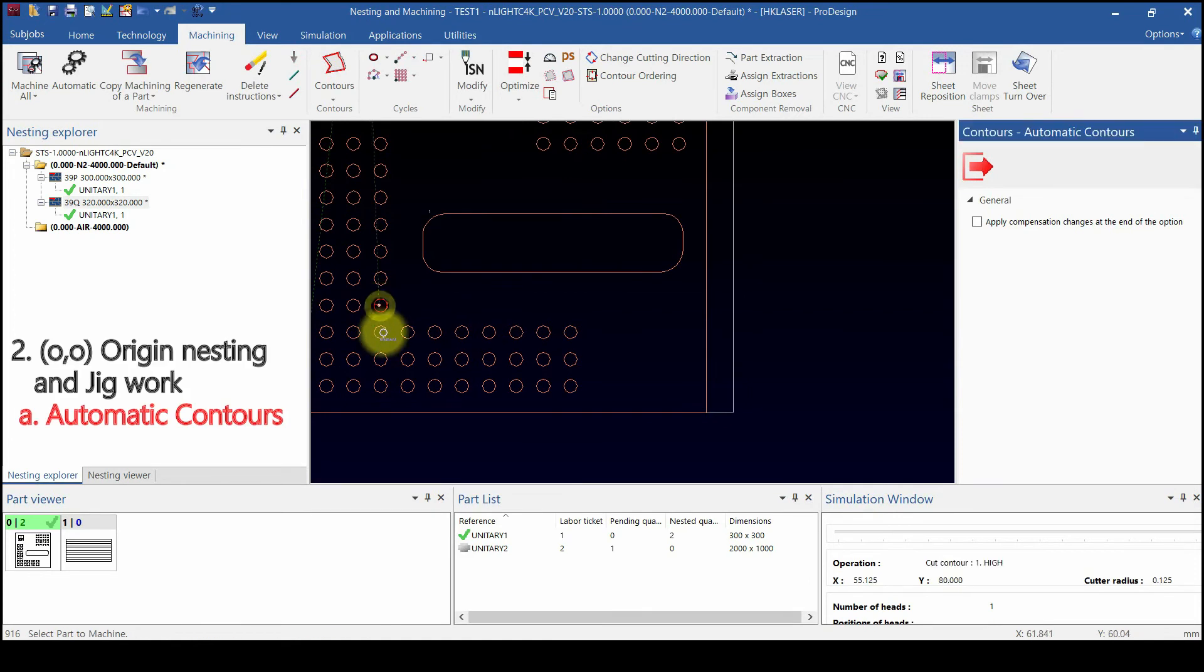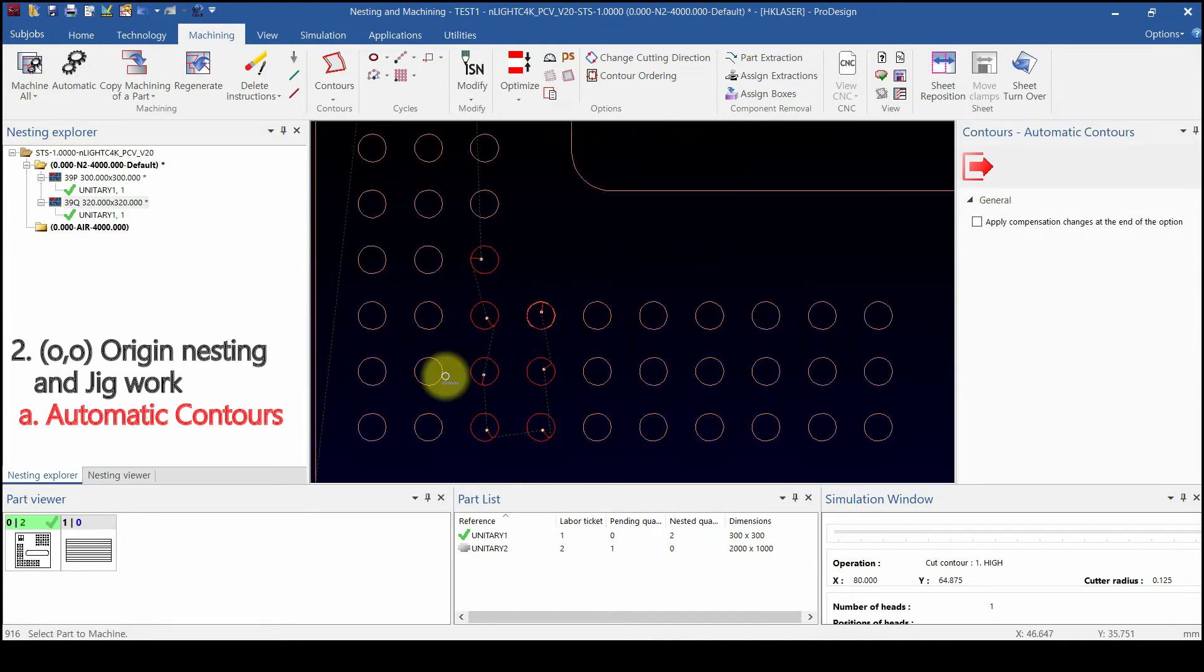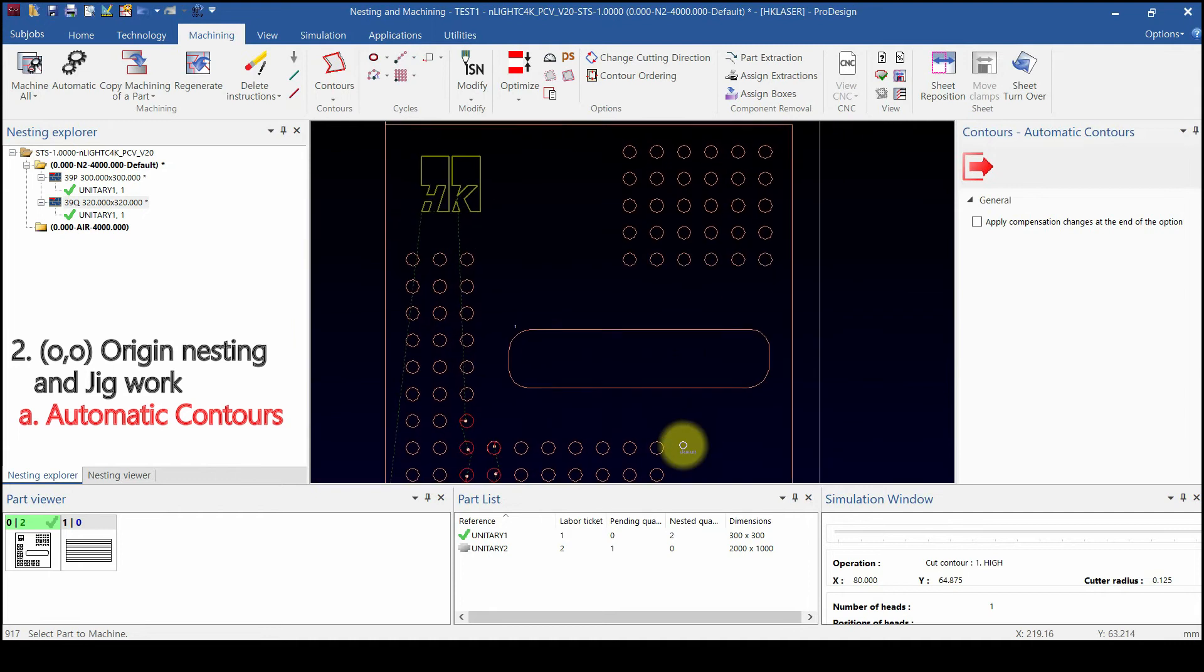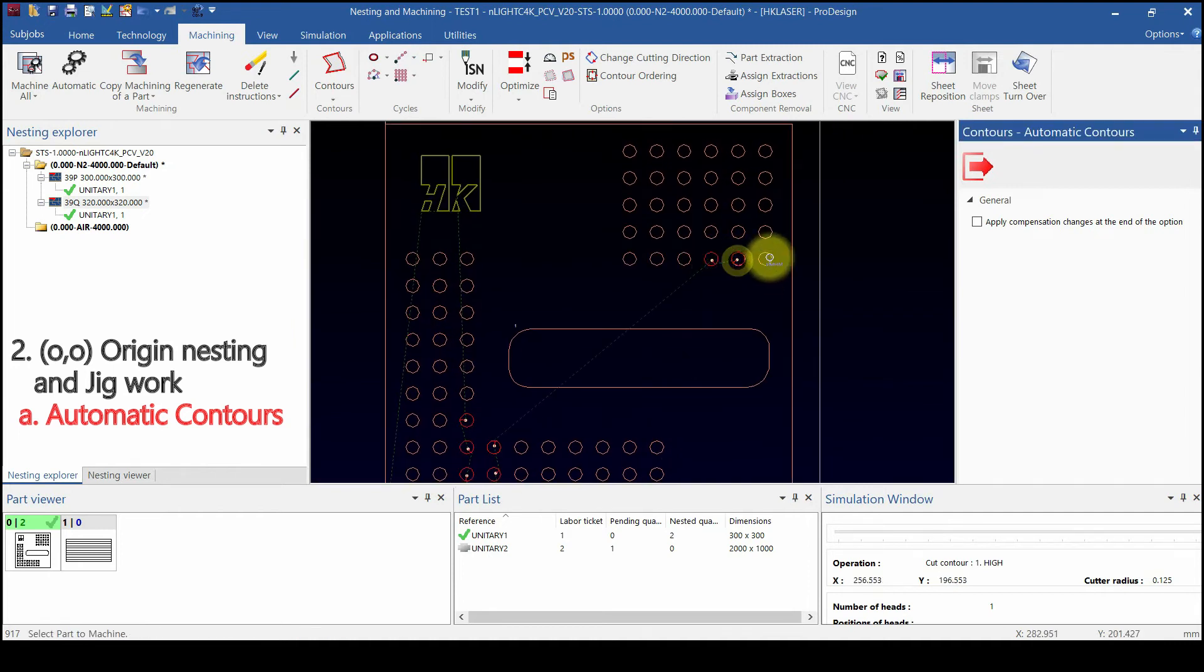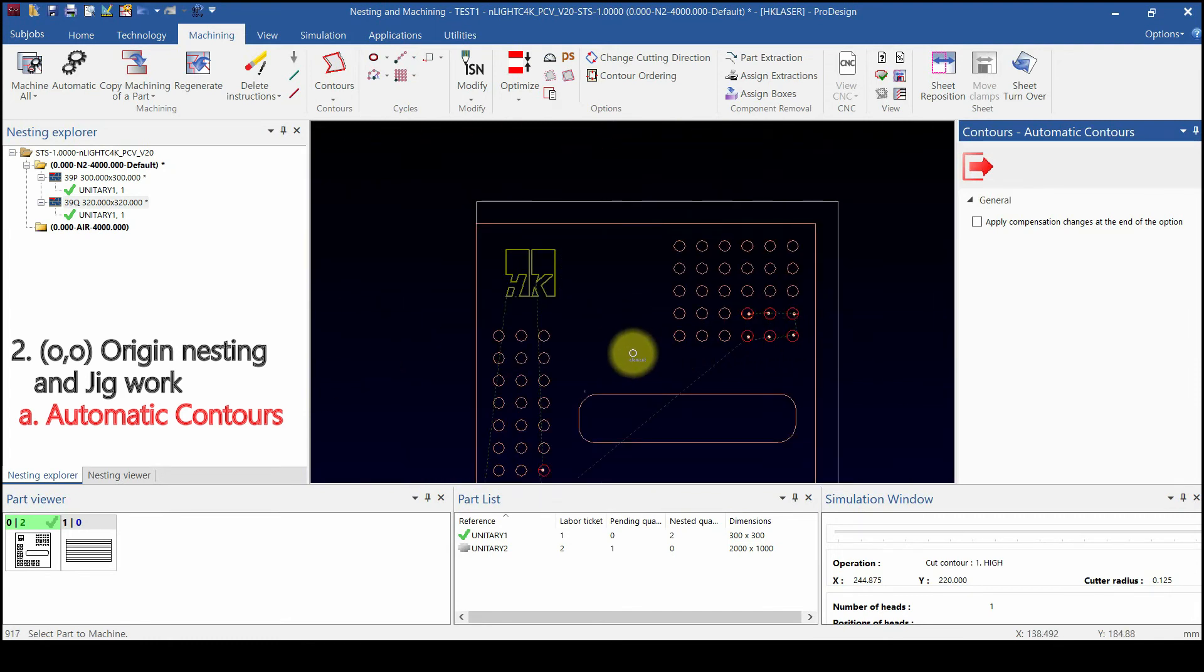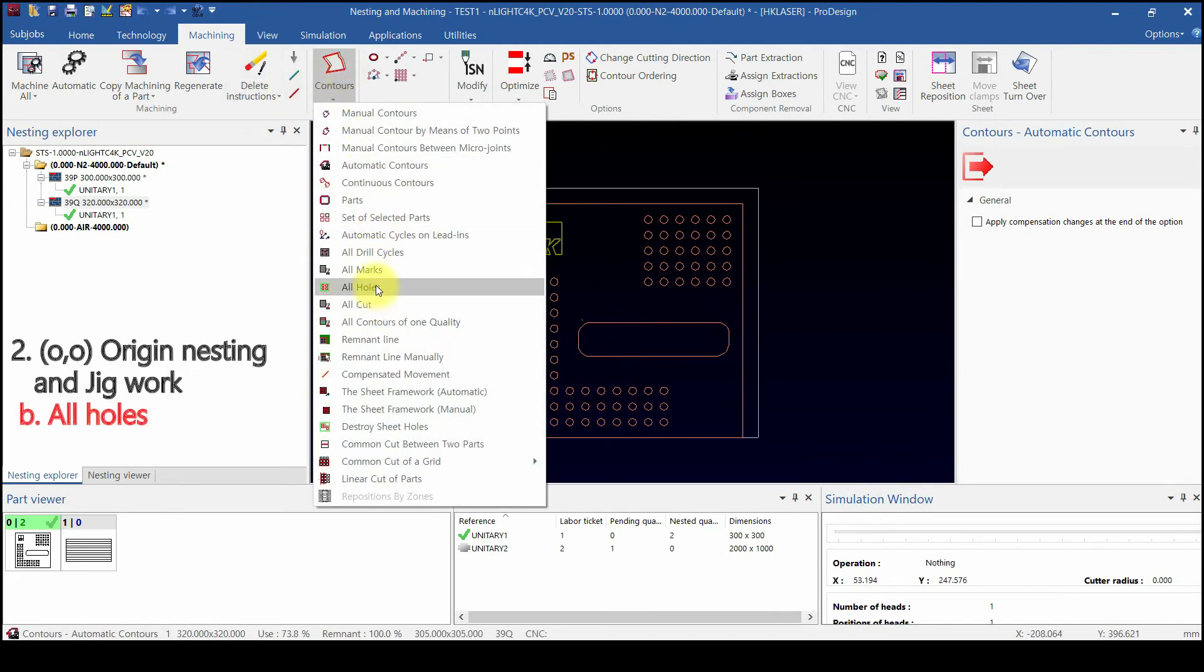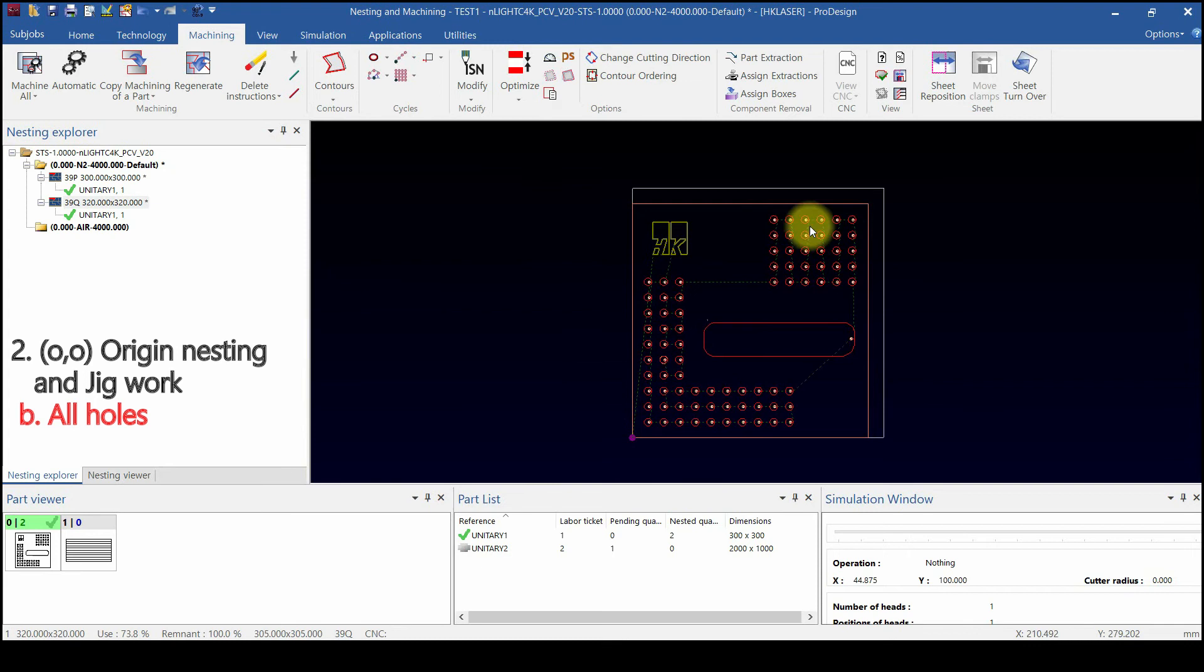If you try to cut few holes, use automatic contour. Select contours you want to cut. All holes - try to cut all holes.